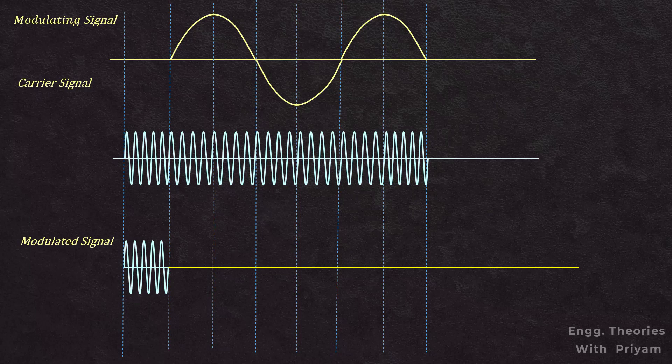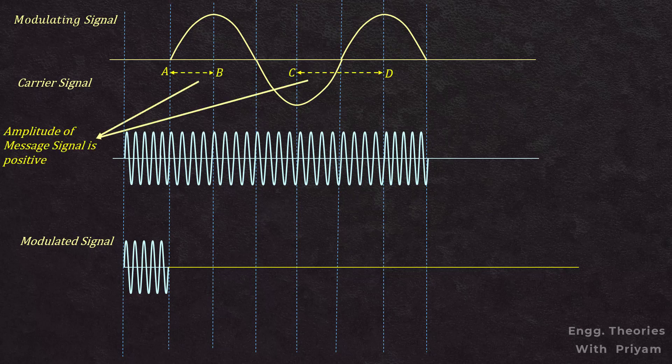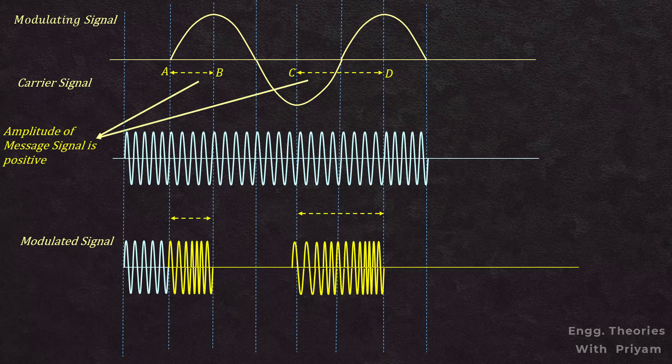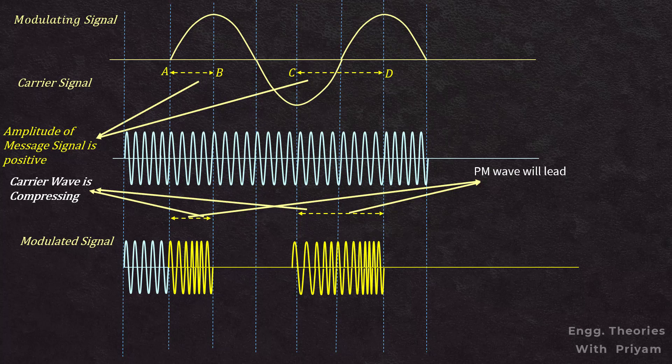As the modulating signal goes positive for points A to B and C to D, the phase deviation becomes positive, and due to this the phase modulated wave leads the carrier signal — or equivalently, the carrier signal lags behind the phase modulated wave. This results in a compression of the carrier signal, or an increase in the frequency of the phase modulated wave.